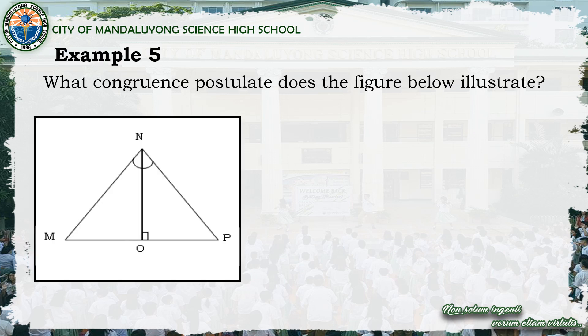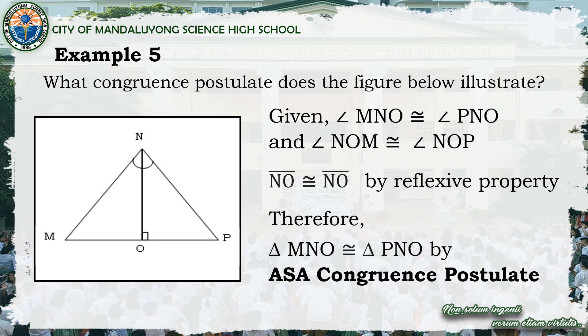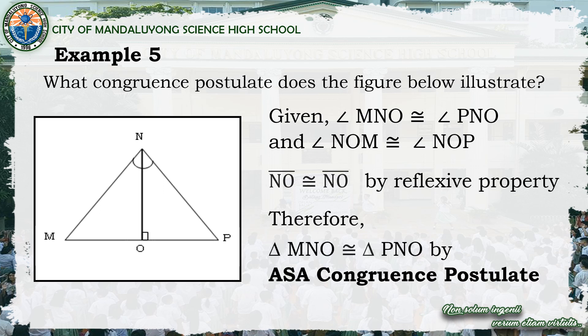Next example: what congruence postulate does the figure illustrate? We have triangle MNO and triangle PNO, wherein NO is their common side. The given are: angle MNO is congruent to angle PNO, and angle NOM is congruent to angle NOP — both are right angles. Since NO is their common side, side NO is congruent to side NO by reflexive property. Therefore, triangle MNO and triangle PNO are congruent by ASA congruence postulate.